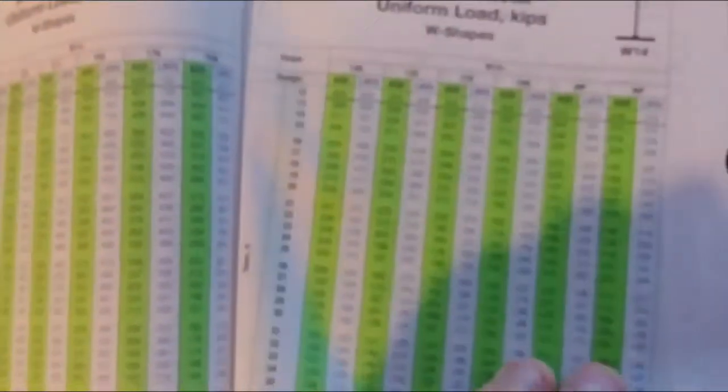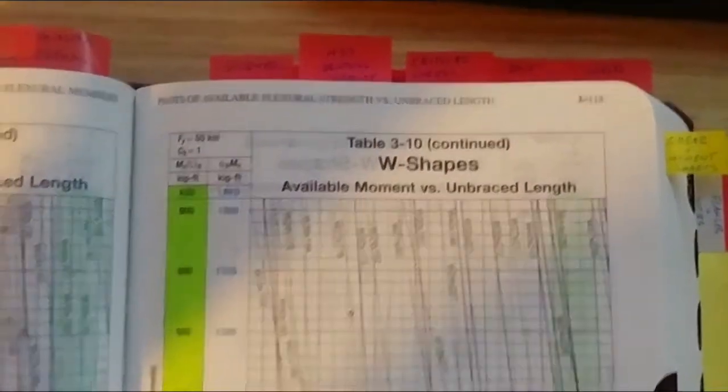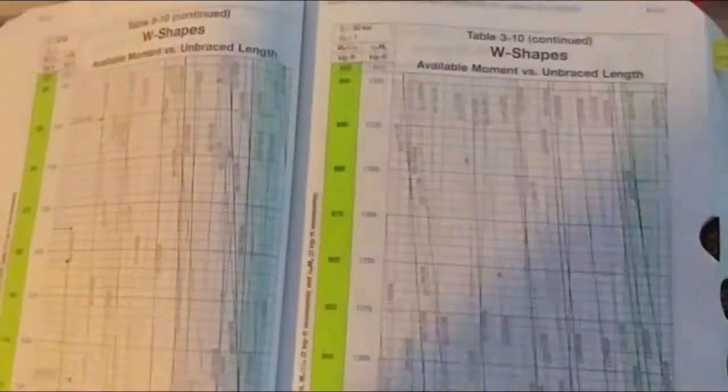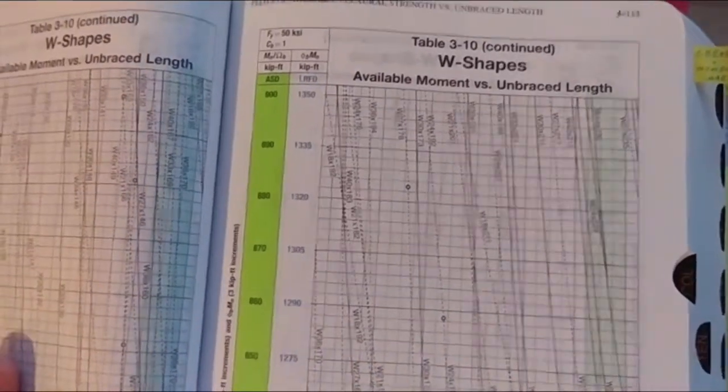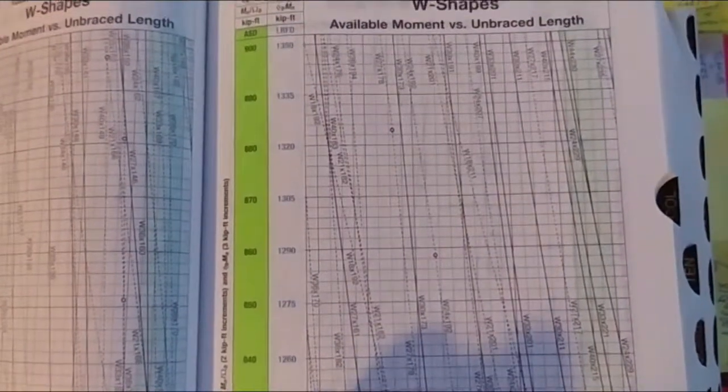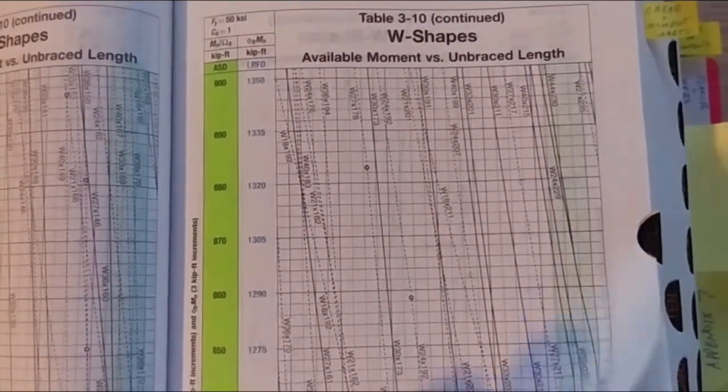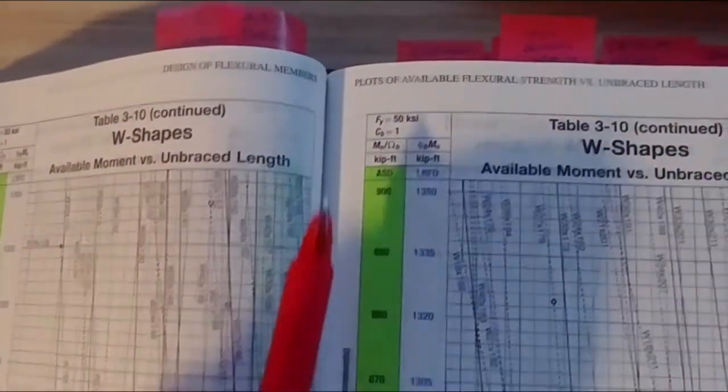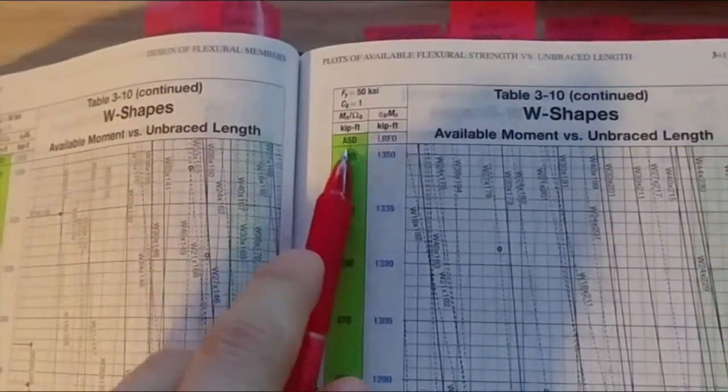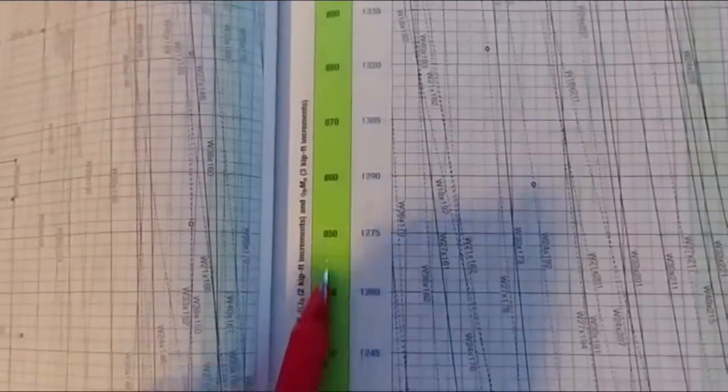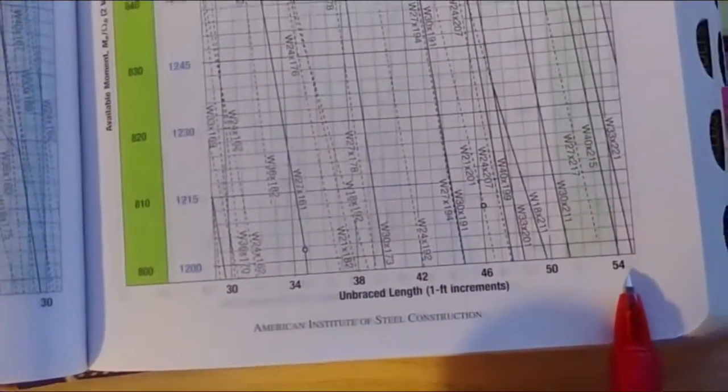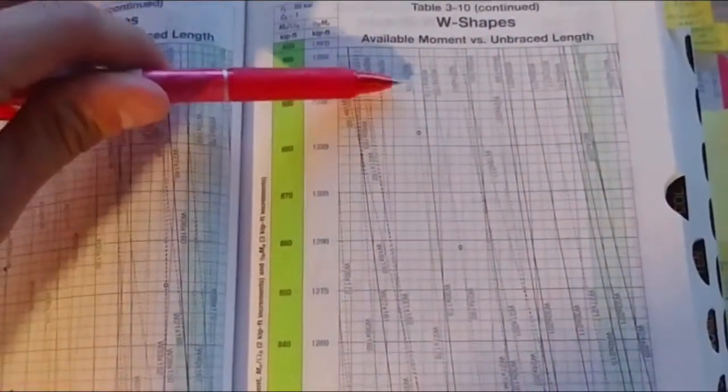So that you can do by hand and it goes really into depth about it, but you can either design or you can calculate LP by hand and LR by hand and then compare it to your unbraced length. Or you can go to your Z table. Now you're understanding why this table is kind of nice. And they have it tabulated here. And LB is the only thing that would change because that's your unbraced length. So you plug those in to the equation here. And that will spit you out a reduced moment capacity of your W section.